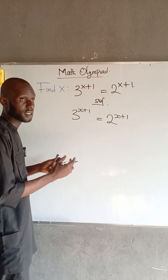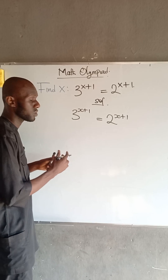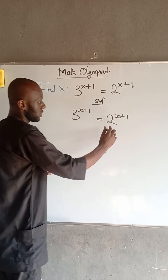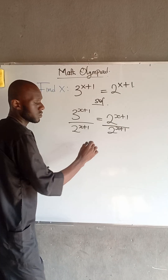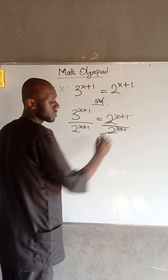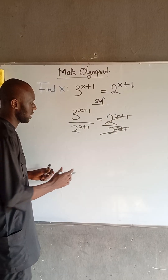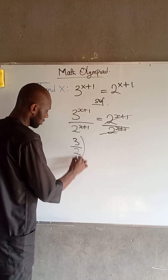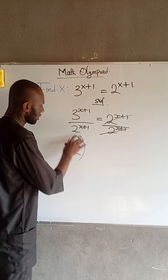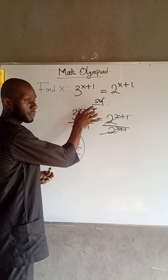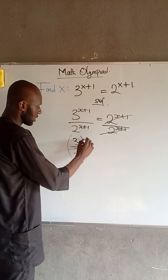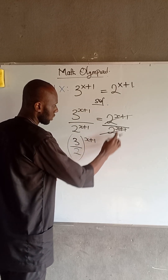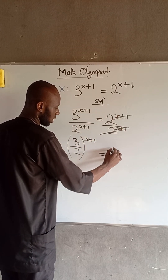The first thing we do here is divide both sides by 2 raised to the power of x plus 1. So at this point, this can cancel out, and we have 3 divided by 2, and since we have the same exponent, this is (3/2) raised to the power of x plus 1 equal to 1.